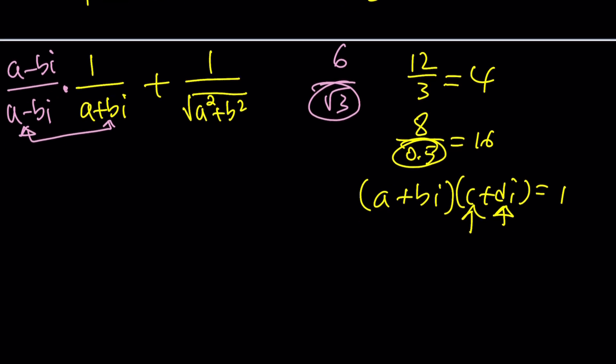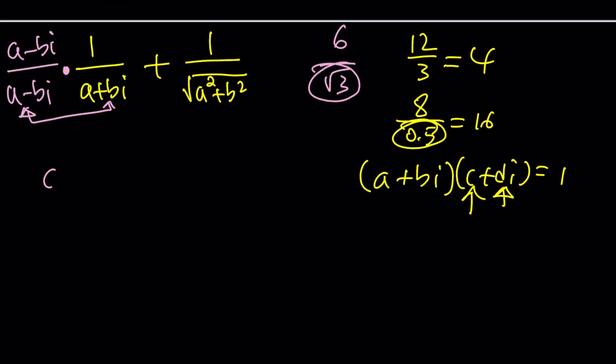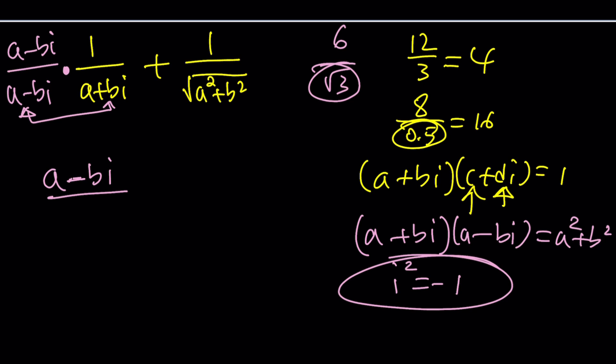Okay so once we multiply by 1 in the numerator we're going to get A minus B I. One thing to keep in mind if you multiply A plus B I and its complex conjugate you get from difference of two squares you get a sum of two squares which is kind of weird because I squared is negative 1 and don't ever forget that. Because remember I told you I is the square root of negative 1 so I squared is negative 1. So you'll get A squared plus B squared here in the denominator.